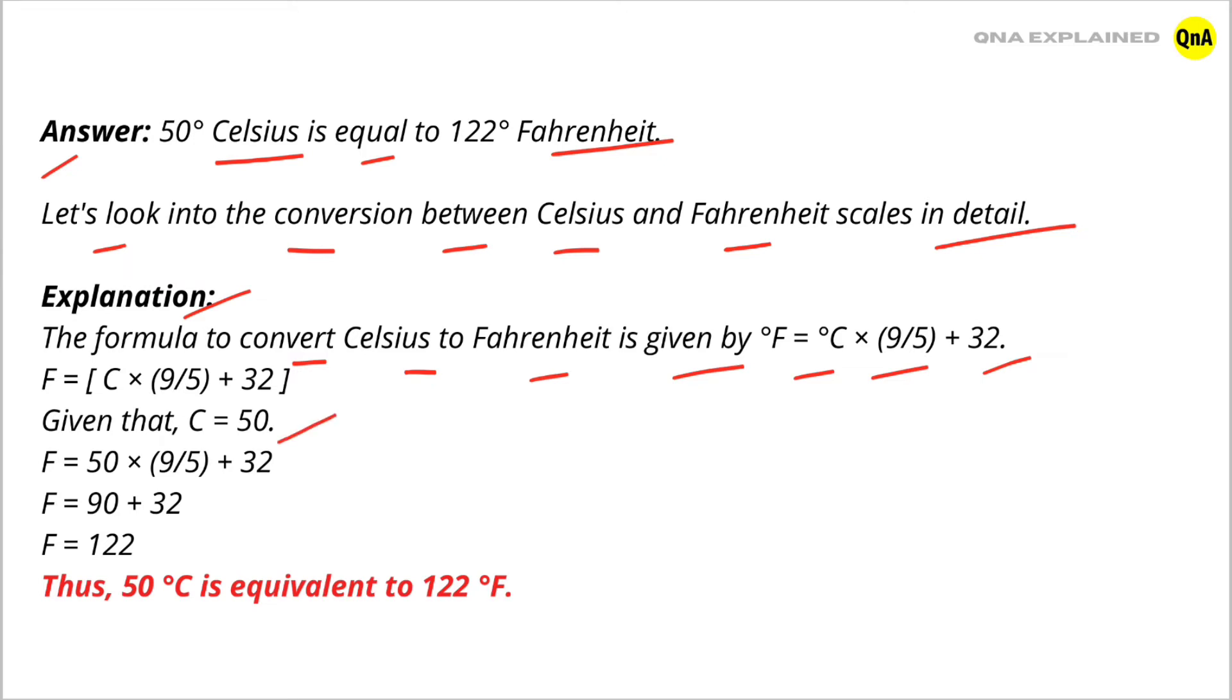put the value of Celsius in this formula: Fahrenheit equal to 50 into 9 upon 5 plus 32, which is equal to 90 plus 32. So, Fahrenheit equal to 122.